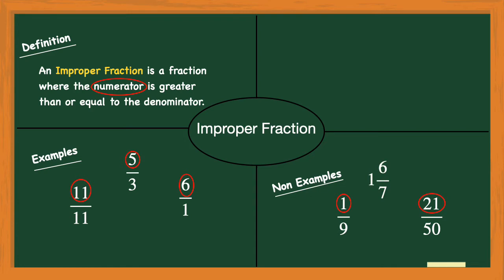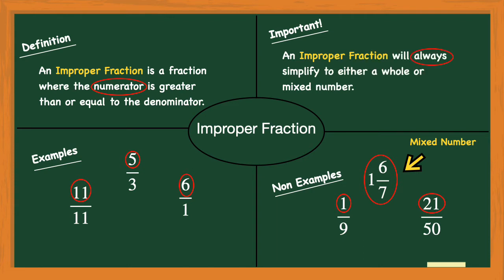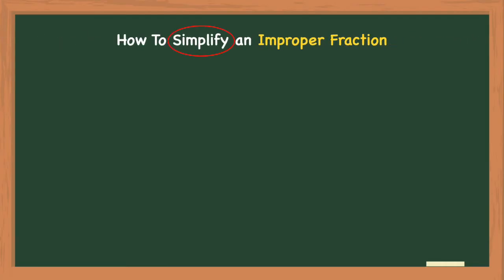My last non-example isn't even a fraction at all — instead it's a mixed number. A mixed number is never an improper fraction. One more important thing: an improper fraction will always simplify or reduce to either a whole number or a mixed number. So if I ended up with an answer of five-thirds, I would need to simplify it.